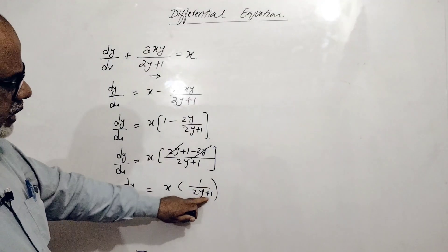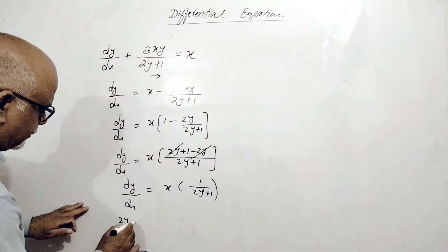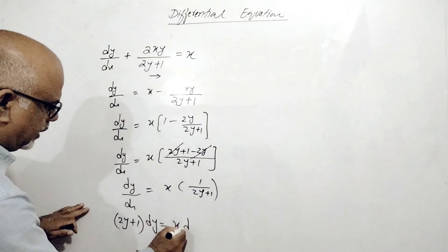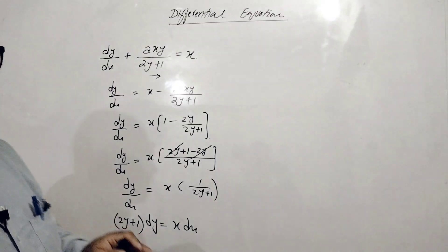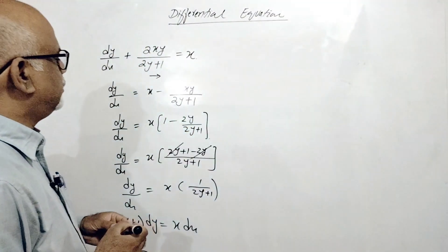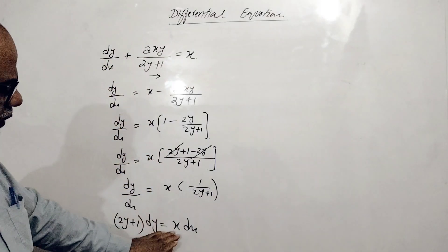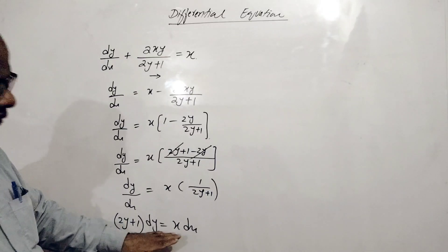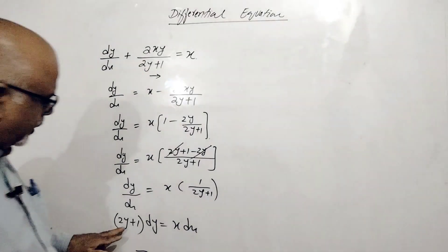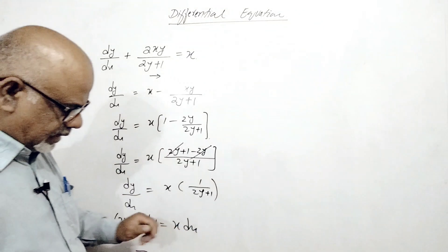So this is 2y plus 1 — we shift it to the side with dy, and x stays with dx. Whenever a differential equation is given, remember: we have to apply all algebraic techniques to separate f(x) with dx and f(y) with dy. So this becomes: (2y plus 1) dy equals x dx.